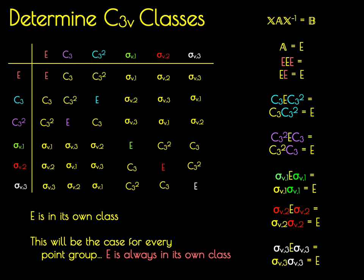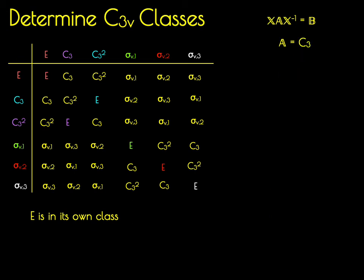Moving along, we're now going to look at the similarity transform of C3 by all elements X. Starting with E, E C3 E is equal to C3. Looking at C3, C3 C3 C3 squared equals C3. For C3 squared, C3 C3 equals C3.